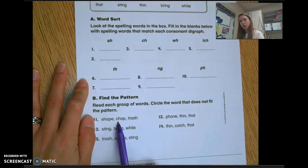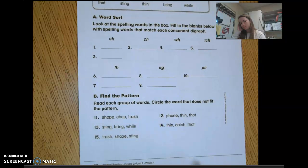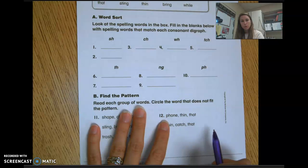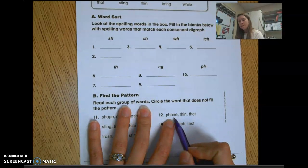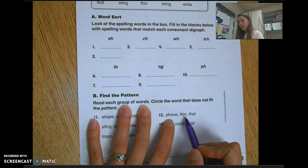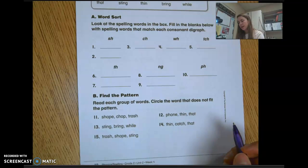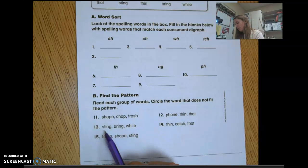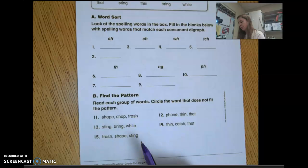Now I'm going to read all of these to you, and as I read, I want you to circle the word that does not fit. You have bone, thin, that - so which one doesn't have the same consonant digraph? On number 13, you have sting, bring, while - so think about which one doesn't fit. Thin, catch, that. Trash, shape, sting - think about which words do not fit.